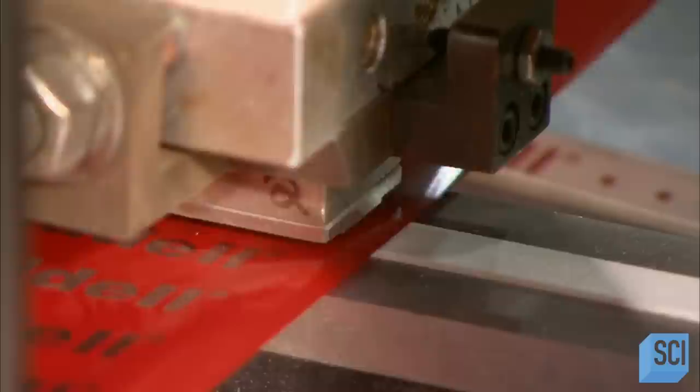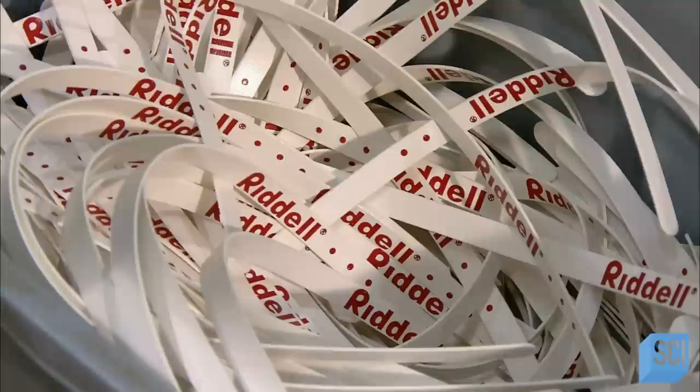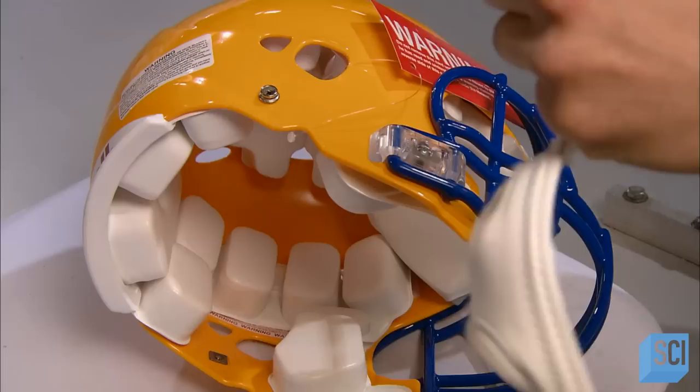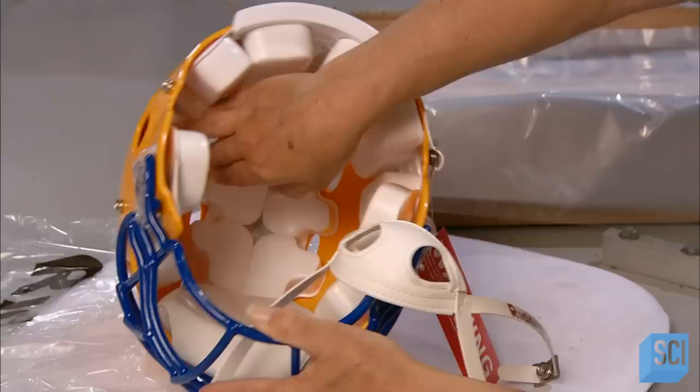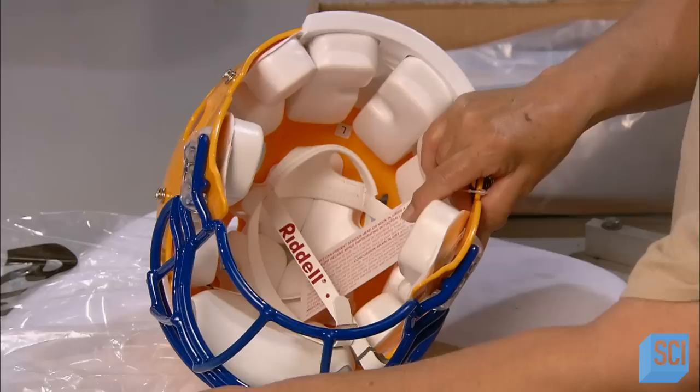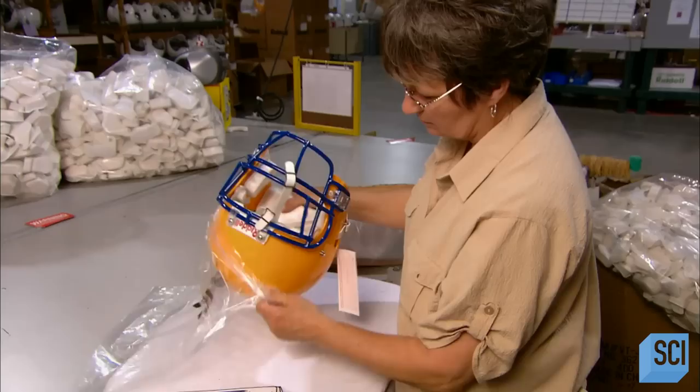This machine uses heat to transfer a foil logo onto the polyester chin straps. It also cuts them to the correct length. Once a chin cup has been sewn to the strap, the assembly is loosely fastened to the helmet. Later, it will be precisely fitted to the player's head. This helmet is now almost ready for kickoff. There's a final inspection and then they wrap it up, complete with the manual and fitting instructions.